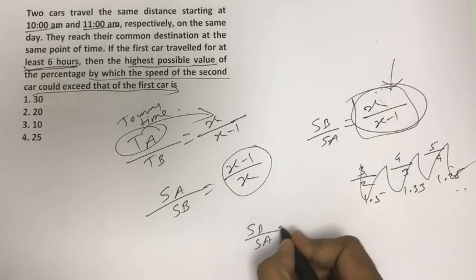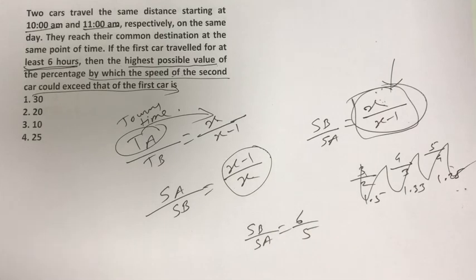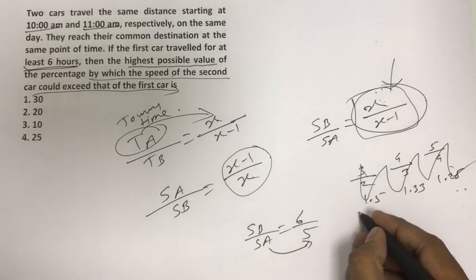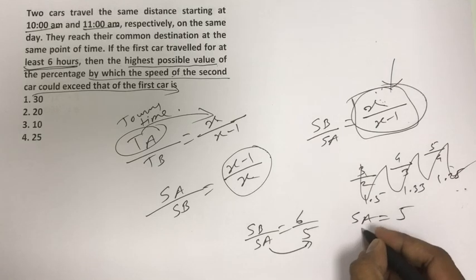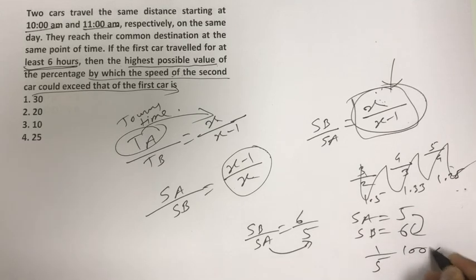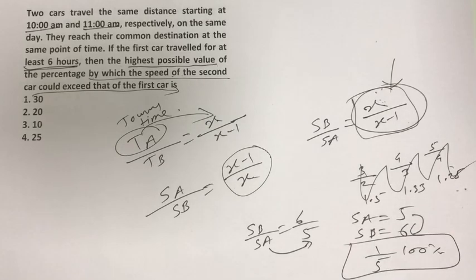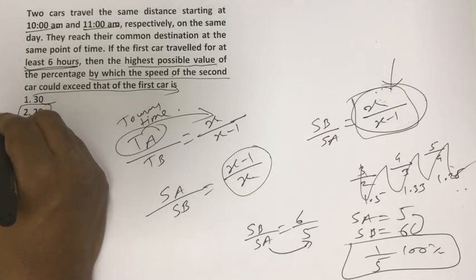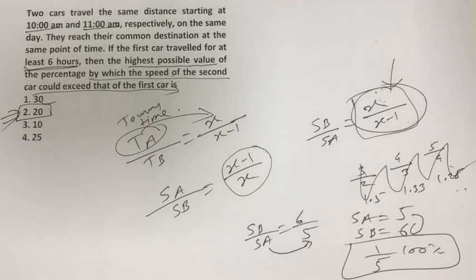So speed B by speed A is 6 by 5. If the speed of A is 5, then the speed of B is 6. This means B's speed is 1/5 more than A. The maximum difference is 1/5, which is nothing but 20%. So speed of B can exceed A by at max 20%, not more than 20%.